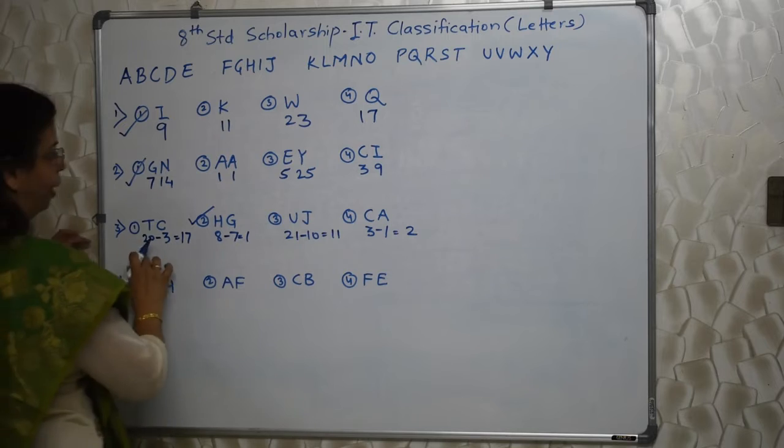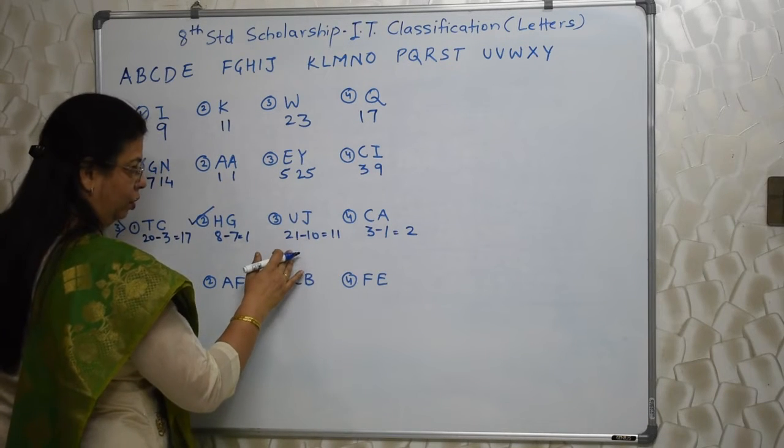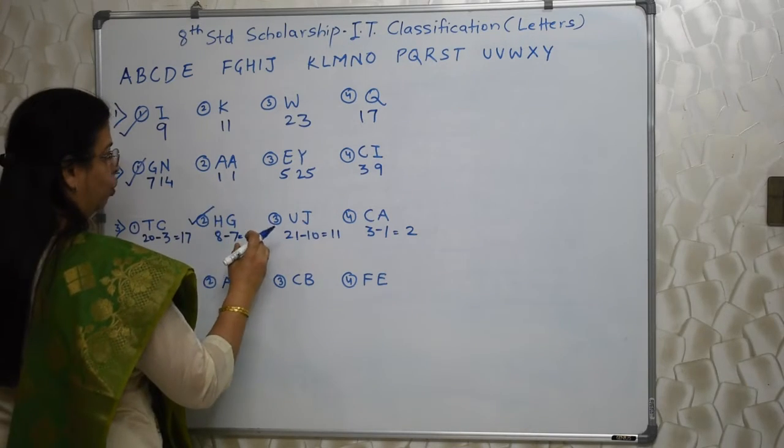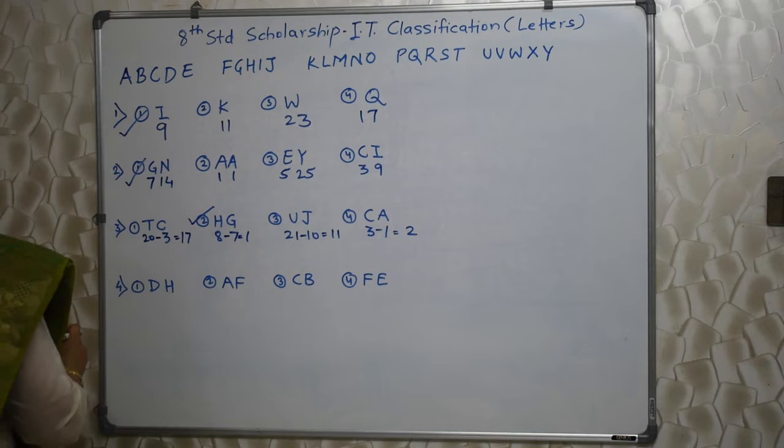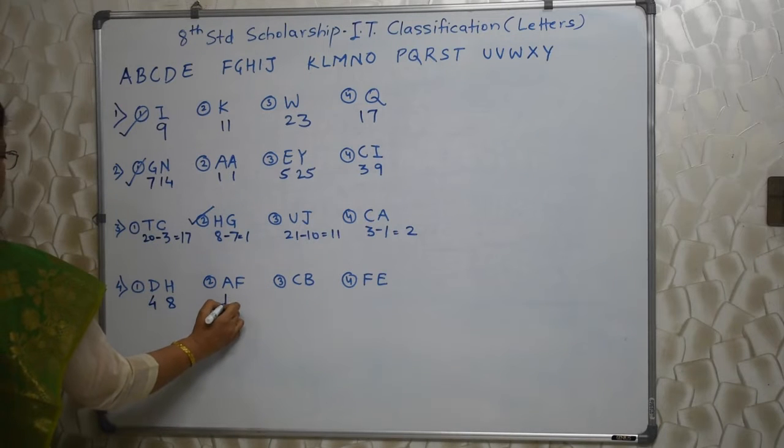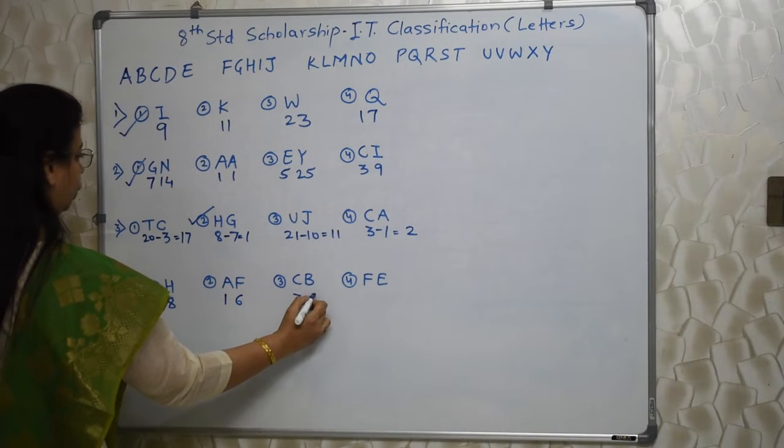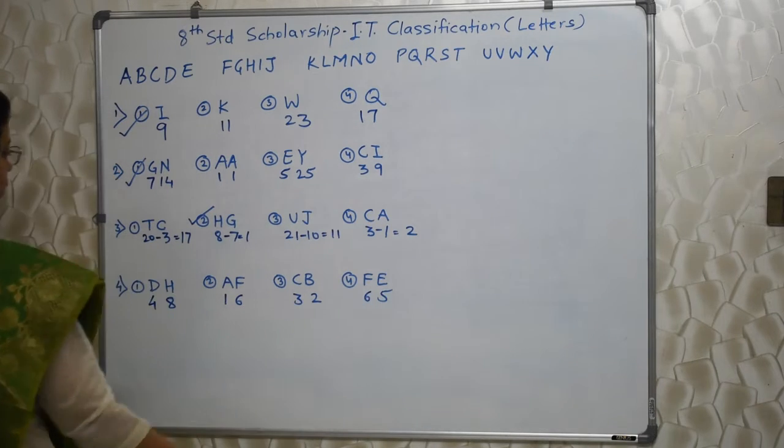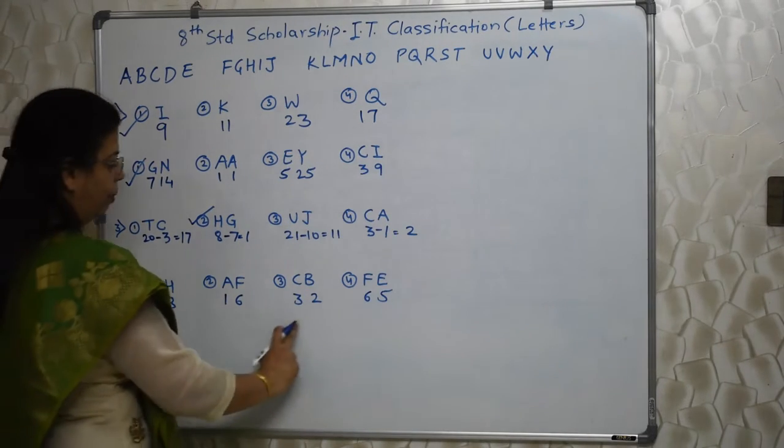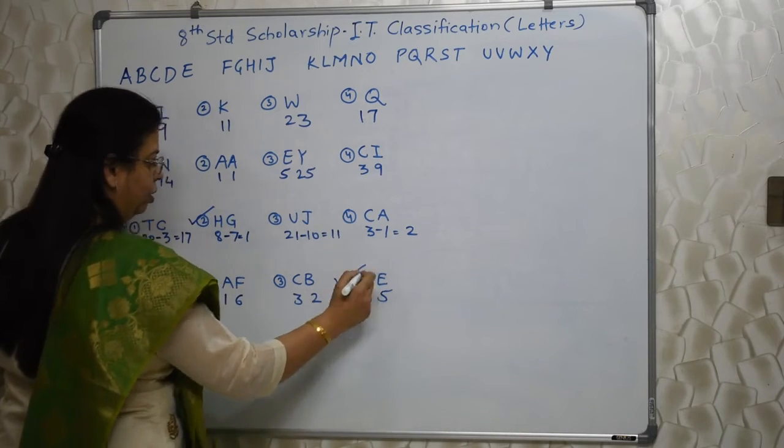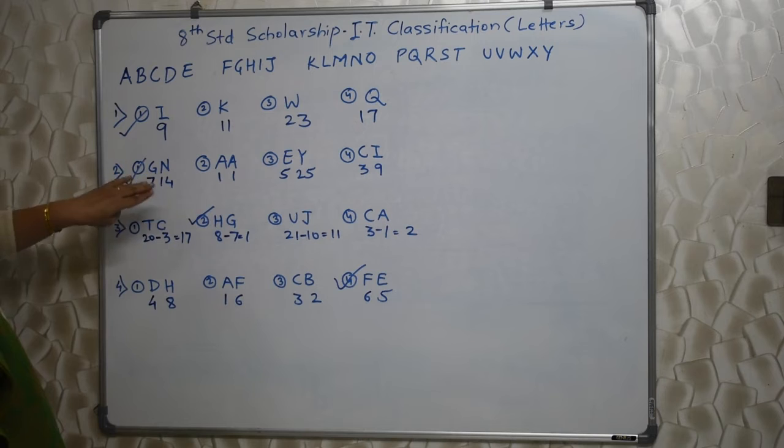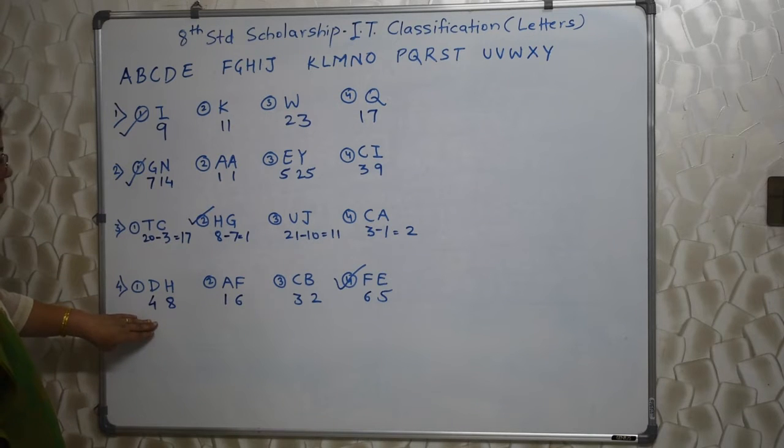You have to apply. If one logic doesn't seem to be correct, don't be scared, don't be upset, try something else. The logics which are expected are going to be very very basic and simple, not very time consuming. So don't worry. Next one, DH. D is 4, this is 8. 1 and 6, 3 and 2, then 6 and 5. Looking at it, 48, 16, 32. They are all multiples of 16. They are in the table of 16. But 64 is there, 65 nahi. So this is odd.